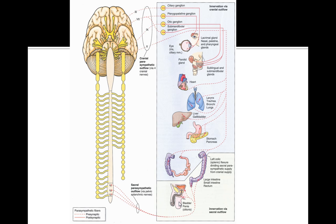This diagram is important to know because there are ganglia in the parasympathetic nervous system where you should focus your attention when answering questions. Cranial nerve 3, which originates in the midbrain, goes to the ciliary ganglion, which affects the pupils. Cranial nerve 7, which originates from the pons, goes to the sphenopalatine ganglion and innervates the lacrimal and nasal glands. Cranial nerve 7 also innervates the submandibular ganglion, which innervates the submandibular and sublingual glands.